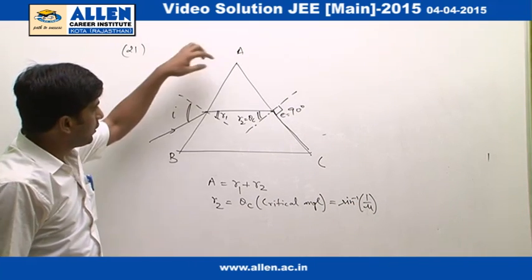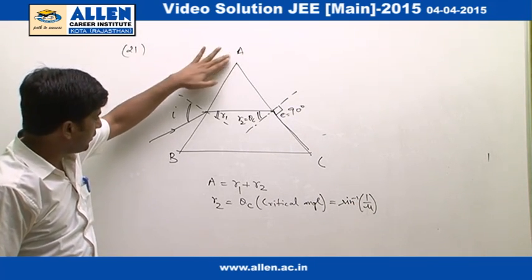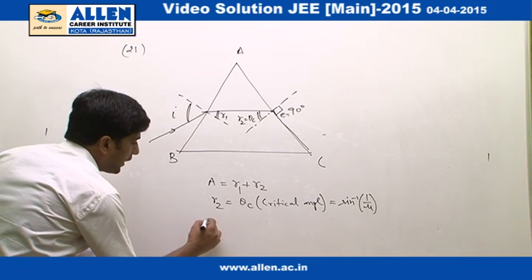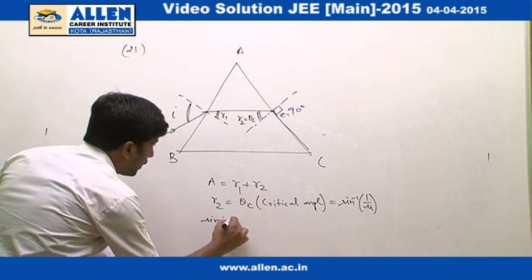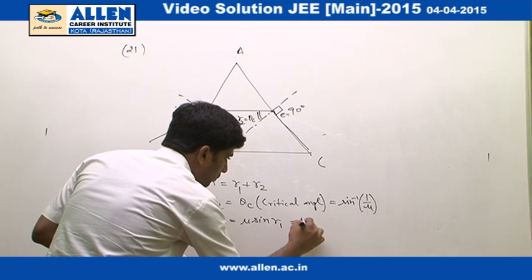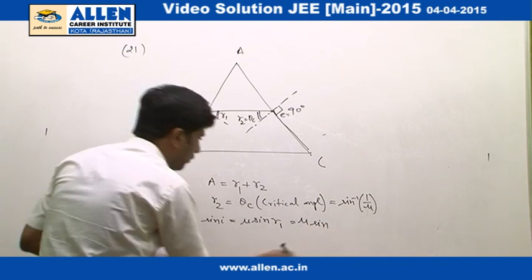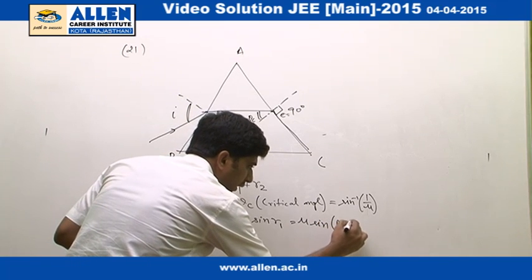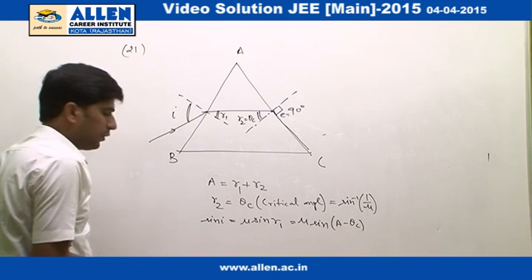Now we apply Snell's law at the face AB, so we get sine i equals to mu sine r1, or mu sine, from the equation, r1 is A minus theta c.